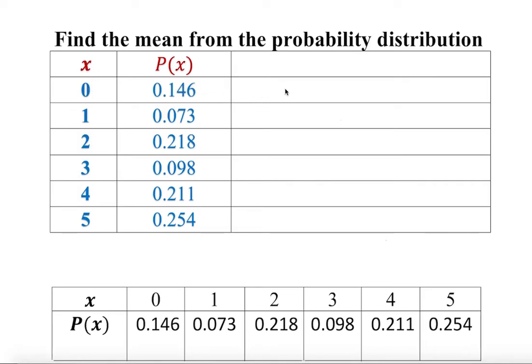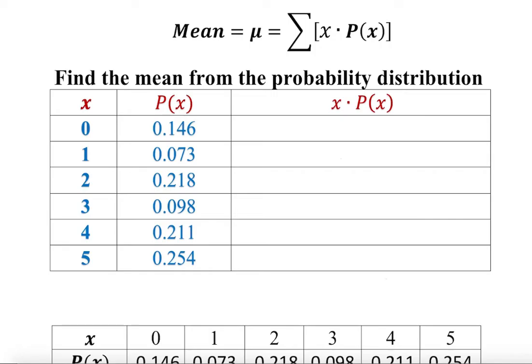You multiply all of these, get all these values, and add them at the end. So x times the probability of x, we're going to multiply them.